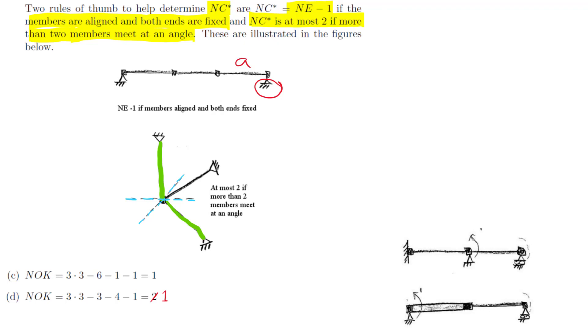Given those two constraints, this node is already prevented from moving. So whether or not I add another member here, I can't add another constraint. Those first two constraints were sufficient to fully fix the node.